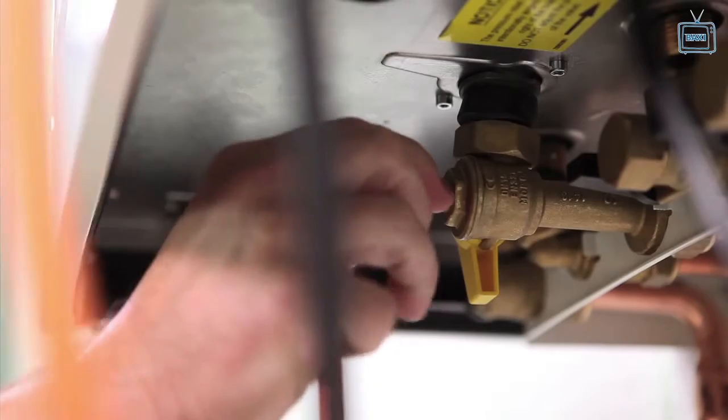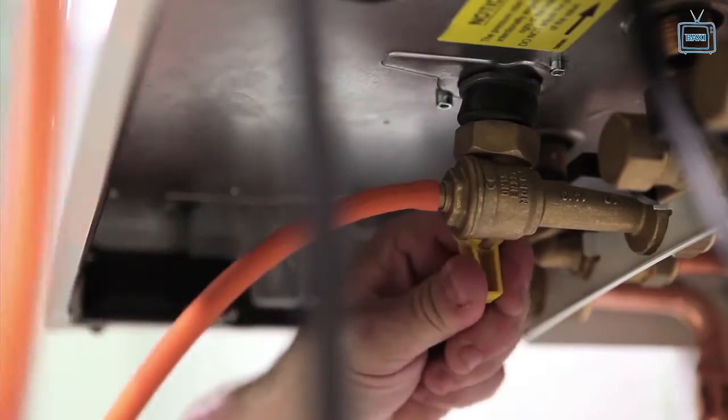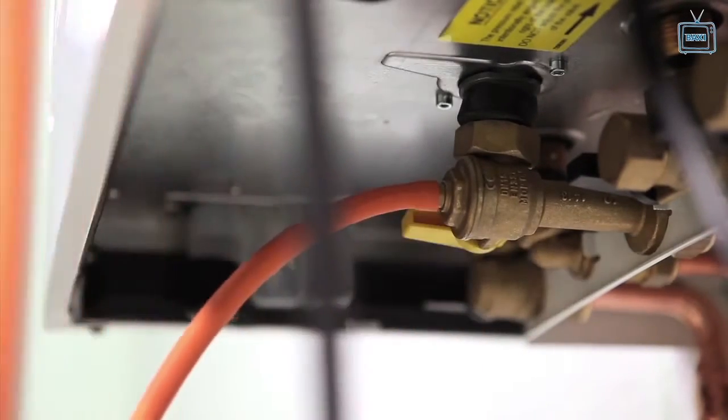The gas inlet test pressure point can be easily found on the gas service cock underneath the boiler.